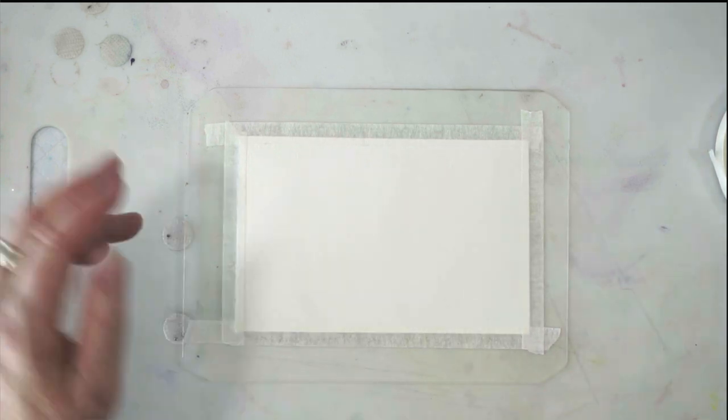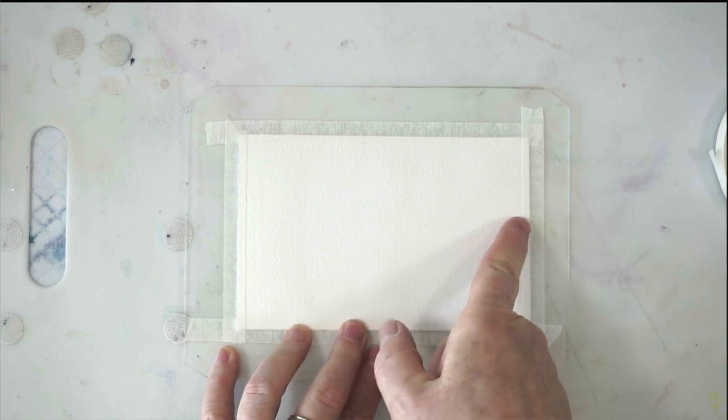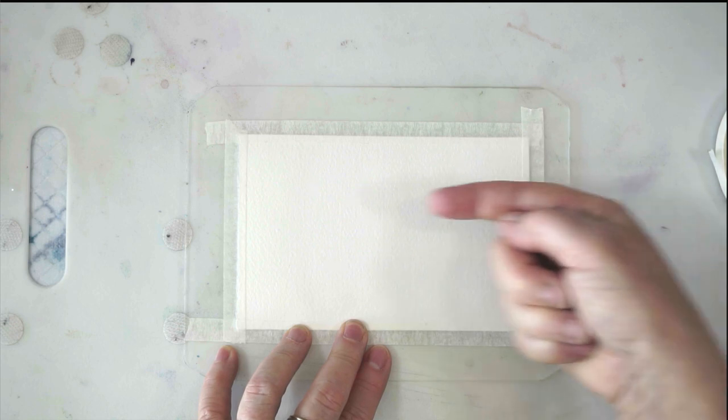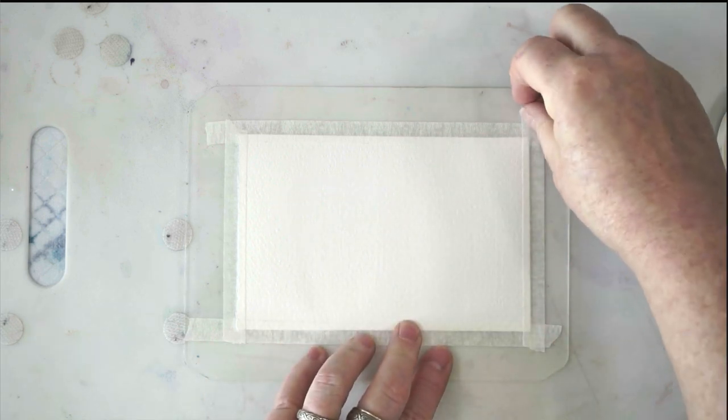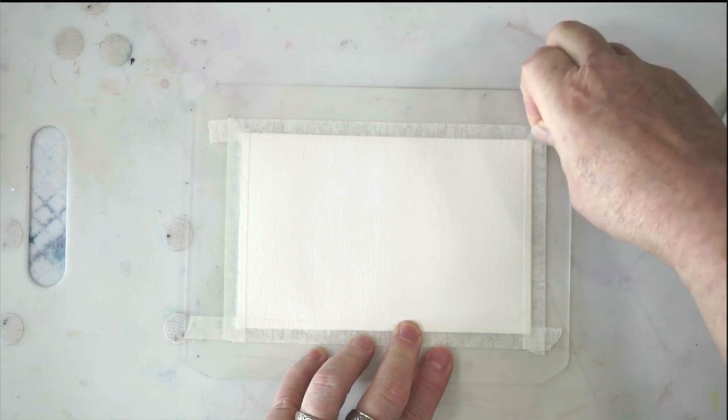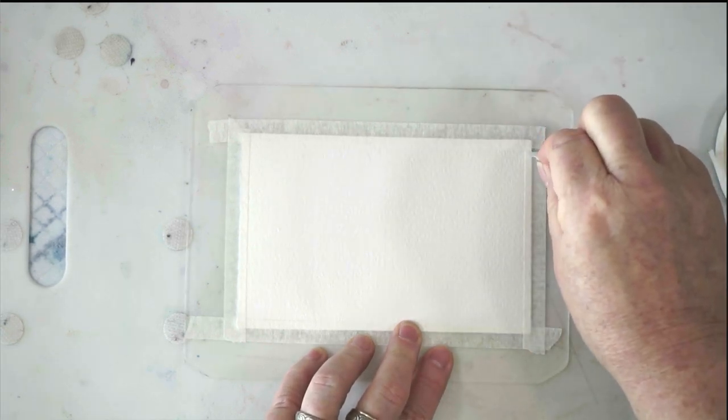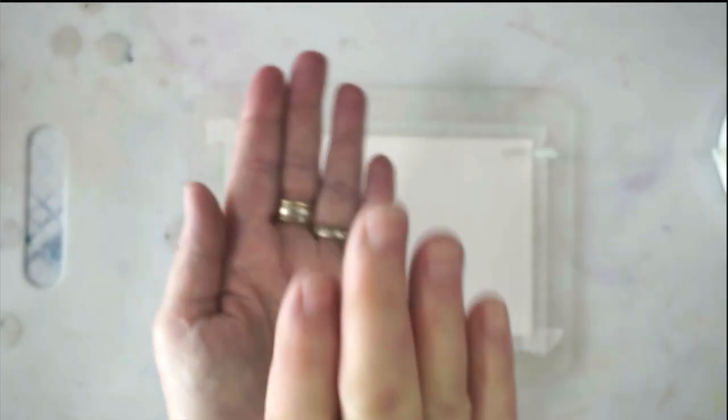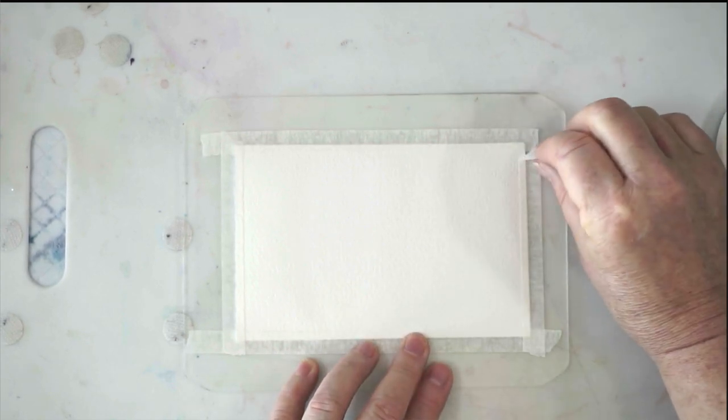So the next tip that I have for you is when you do go to remove the tape, in case there is some moisture, especially under the tape where it's trapped, the moisture has to go out from under the tape and then up. Instead of pulling the tape straight up like this, that's the direction that the paper is most likely to separate. So if you pull straight up, that's the most likely to tear.